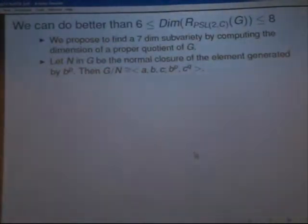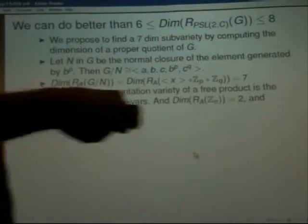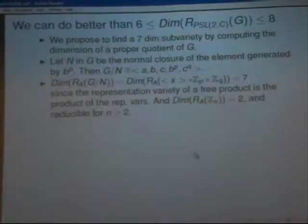So now we have here, if you observe, this is the free product of an infinite cyclic group and two finite cyclic groups. So right away, we know that the dimension of the space of representation of G module N over A, where A is PSL(2, C), is going to be equal to the dimension of this thing, because I said before that the free product of groups, when you look at the dimension, breaks up into the product of the corresponding algebraic varieties. So the dimension of that is seven.